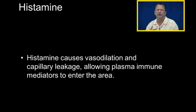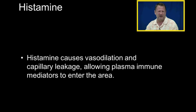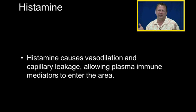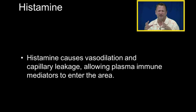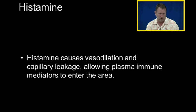When you get a mosquito bite and it starts to get red, inflamed, and itchy, that's because the mosquito has damaged the cells in that area, causing histamine to be released. That causes vasodilation and capillary leakage so that immune mediators can leave the blood supply, go into the tissue, and attempt to correct the problem.